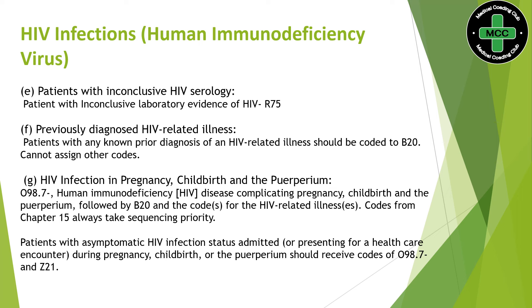If the patient is pregnant and has asymptomatic HIV infection with no symptoms, we will be assigning Z21 as secondary instead of B20.